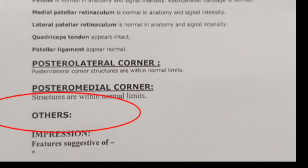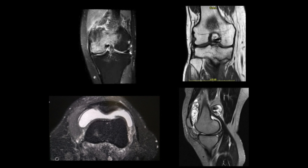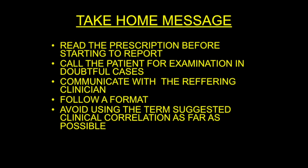Lastly, there are a few things we need to see before completing our MRI report: bone edema pattern, any trabecular lines, effusion, synovitis, and anything else that may exist outside our format. After following this format, we come to our impression, which should be very crisp, clear, not descriptive, and very assertive.